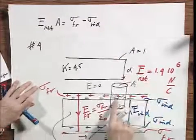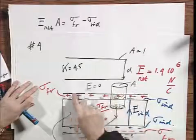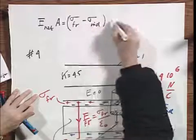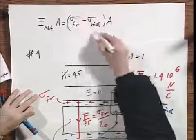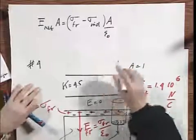That is sigma free minus sigma induced. The minus sign because the induced charge here is negative. And I have assumed that this metal plate here is positive. Times A.